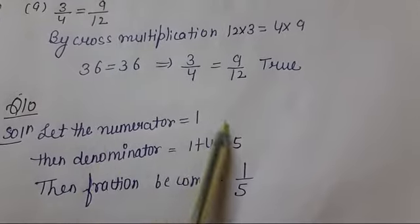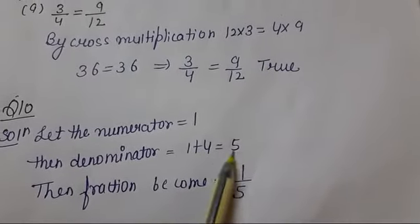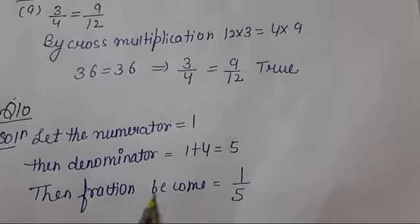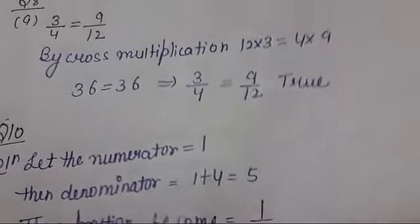Question 10: Let the numerator be 1, then denominator equals 1 plus 4, which is 5. Then the fraction becomes 1 upon 5. Is it clear, students?